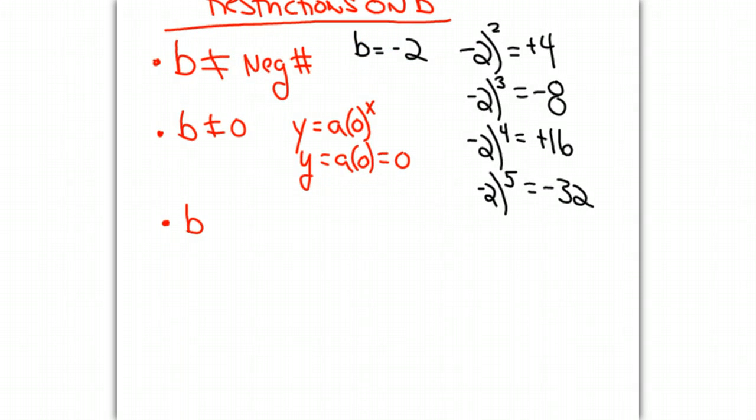We're also going to put the restriction that b cannot equal 1. If we think about what happens when b equals 1 in our function, we would have a times 1 to the x. We know that 1 raised to any power is going to equal 1. We would again get a horizontal line, y equals a.